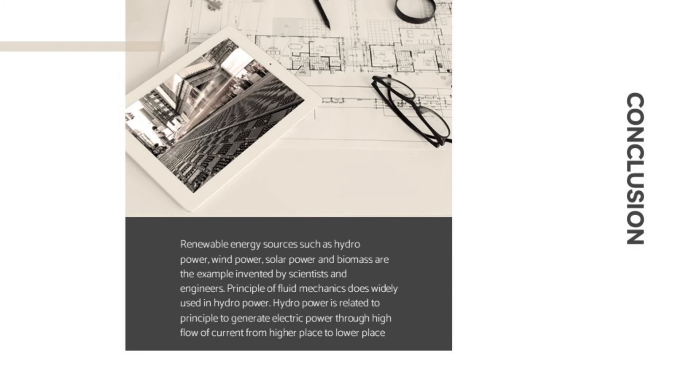Scientists and engineers work day and night to reduce dependence on fossil fuels by creating renewable energy sources. Renewable energy sources such as hydropower, wind power, solar power, and biomass are examples invented by scientists and engineers. These energy sources are widely being used and accepted to replace fossil fuels. From the statistics we obtained in 2010, renewable energy source usage has increased every five years and is still continuing.